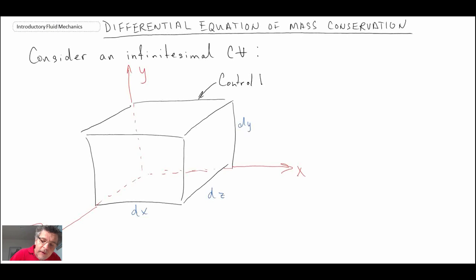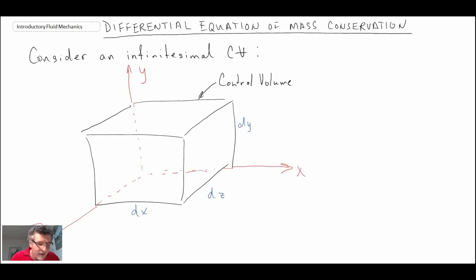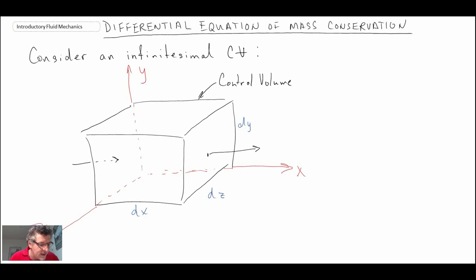What I'm going to do is write out an expression for the mass flux in the x-direction. We're going to use the Taylor series expansion in order to express this. We'll have mass flux coming in on the back surface, and mass flux leaving the front surface. So let me write out a Taylor series expansion for the mass flux.